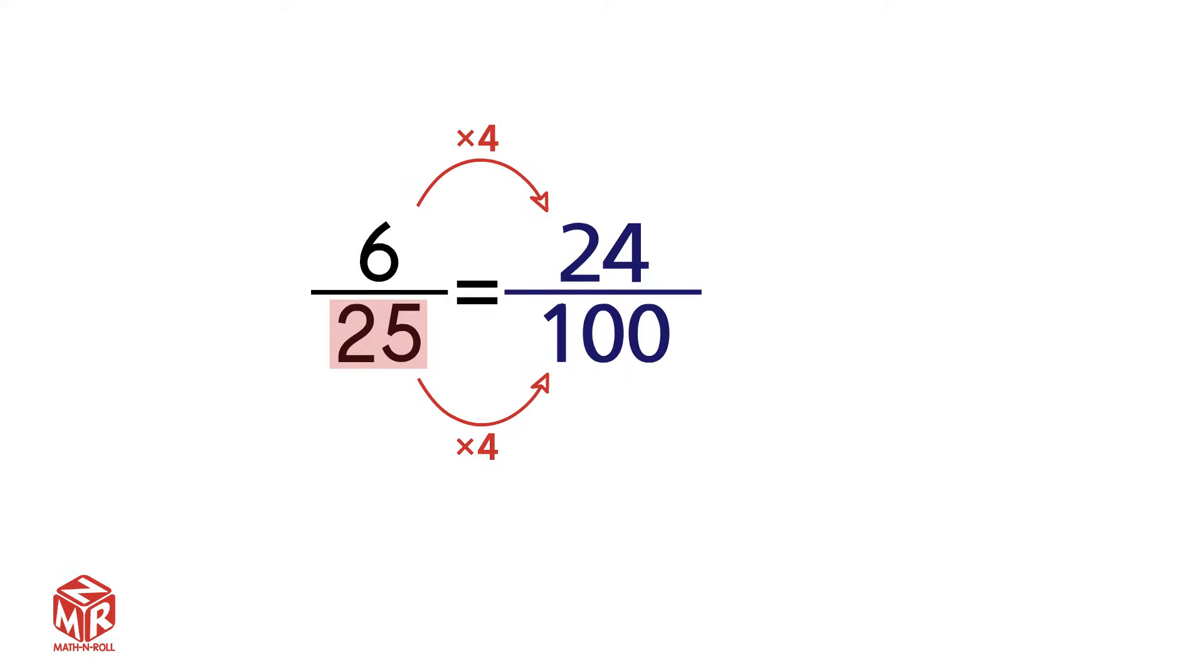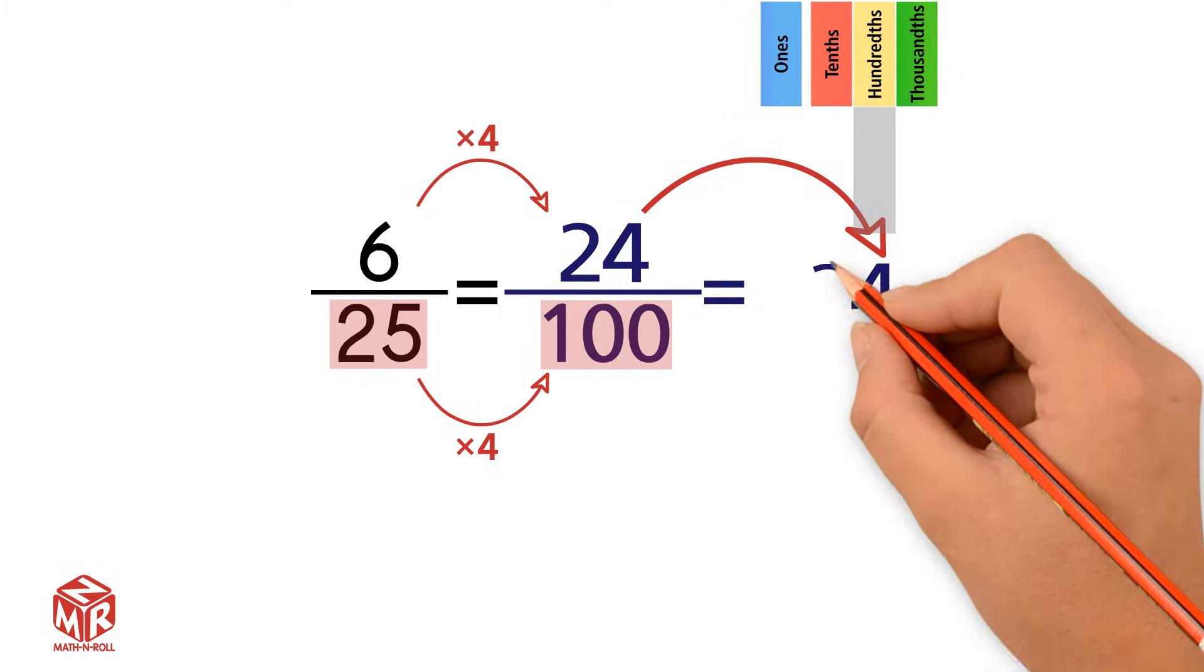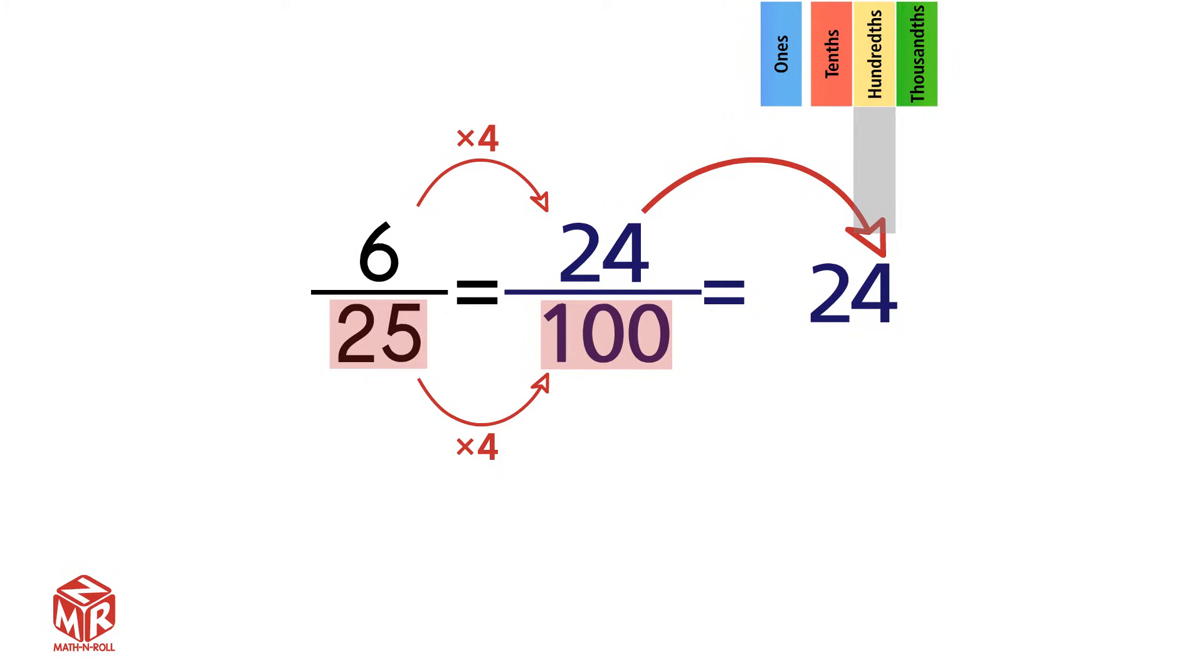Now let's write 24 hundredths as a decimal. We have 24 over 100, or 24 hundredths. To convert to a decimal, we have to write the last digit in the hundredths column. So we have a 4 in the hundredths column, and a 2 in the tenths column. Then we add our decimal, and we add the zero.